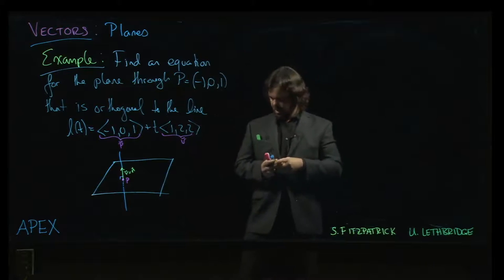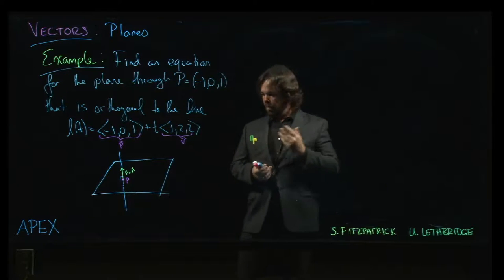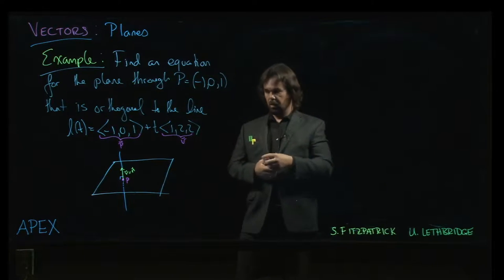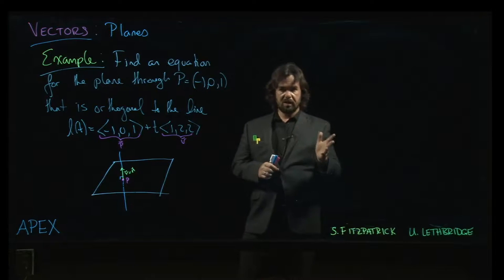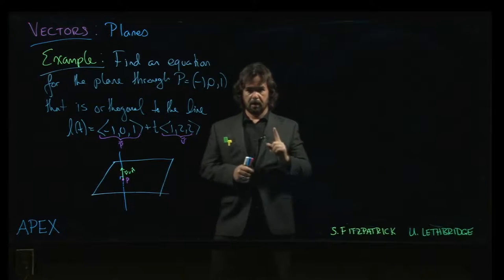So the key thing here is just reading off the information that you want. What do you need to get the equation of a plane? You need a point on the plane, given, and you need a normal vector.